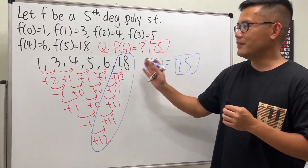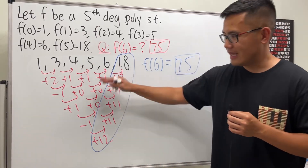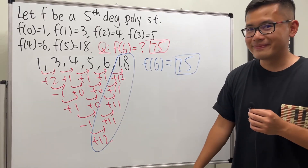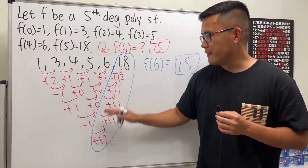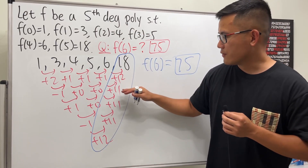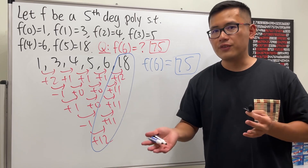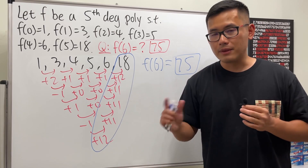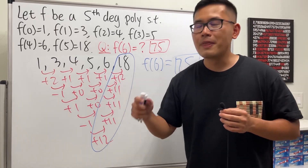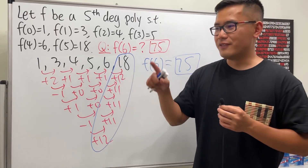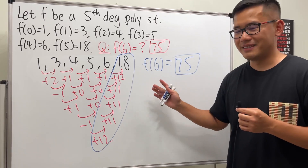This is called the difference method — you are finding the successive difference at each level. If this is a 5th-degree polynomial, you'll get a constant at the fifth level. So this is the first, second, third, fourth, and fifth difference. It's like the fifth derivative of a fifth-degree polynomial — it's a constant. Similar idea. That's it.